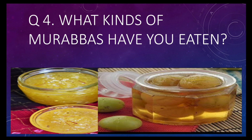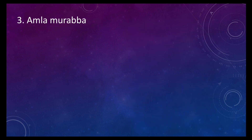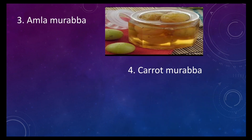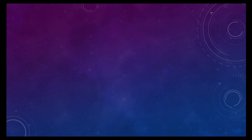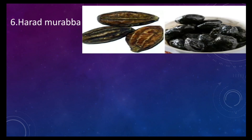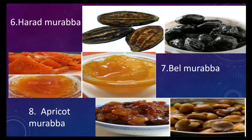Some examples of murabbas include: apple murabba, pineapple murabba, amla murabba, carrot murabba, cherry murabba, harad murabba, bel murabba, and apricot murabba. From all these names of murabbas, you can write the names of the murabbas you have eaten as your answer to this question.